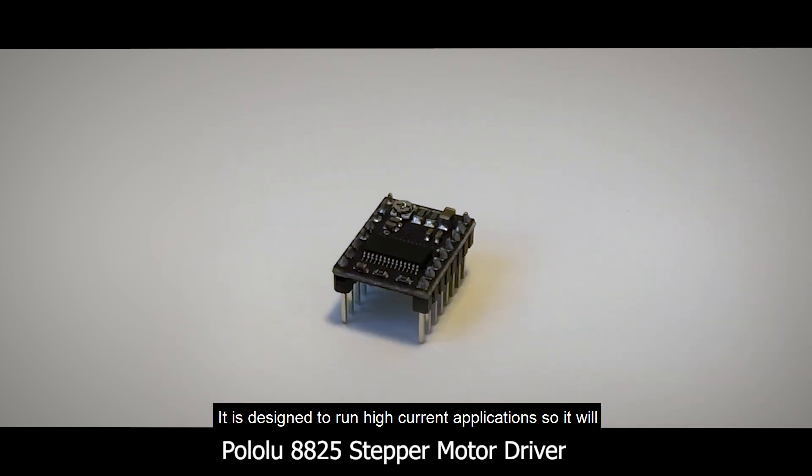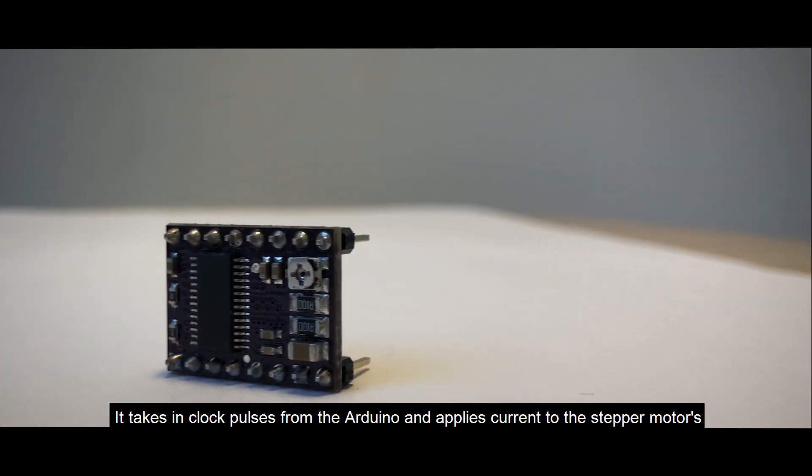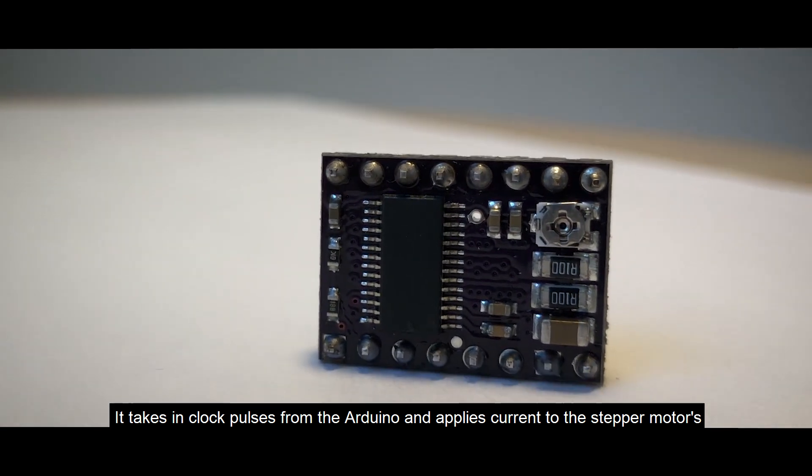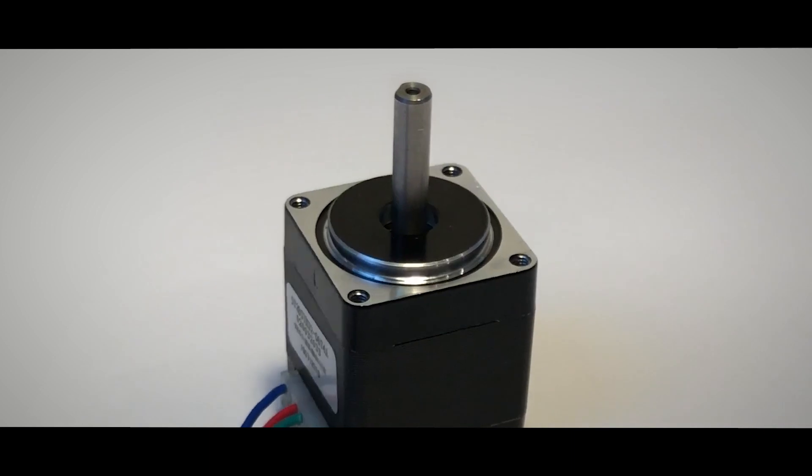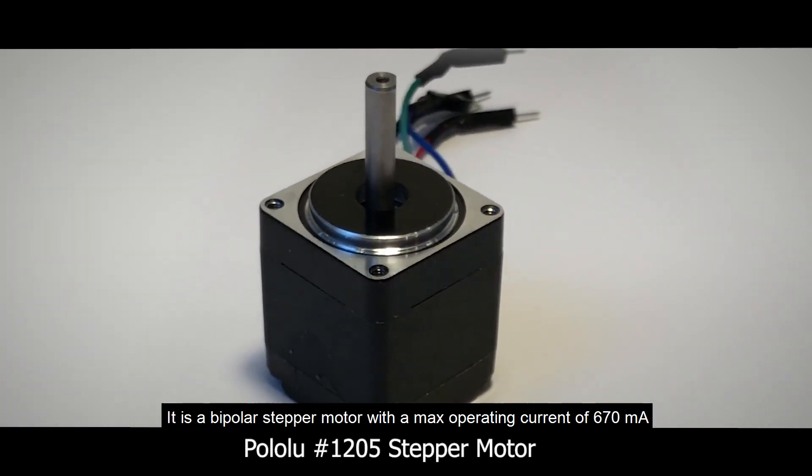It takes in clock pulses from the Arduino and applies current to the stepper motor's two coils accordingly to control each step. The stepper motor we will be using is from Pololu as well. It is a bipolar stepper motor with max operating current of 670 milliamps, and it should be strong enough for this project.